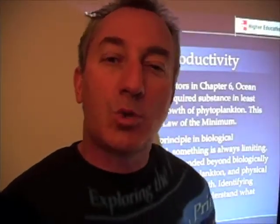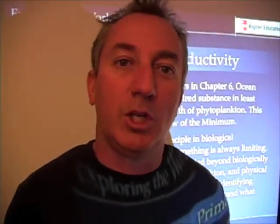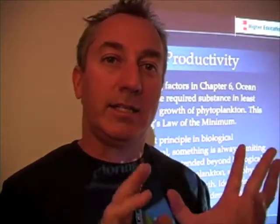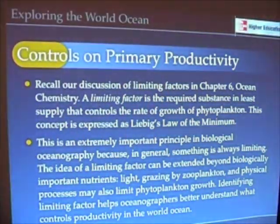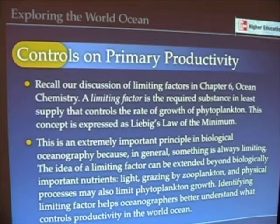Let's look now at things that control primary productivity in the ocean, namely light and nutrients. Any factor that limits or controls the growth rate of phytoplankton, or any kind of cell, is called a limiting factor.